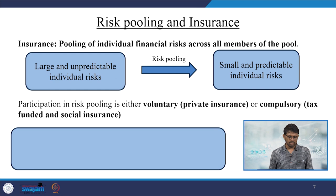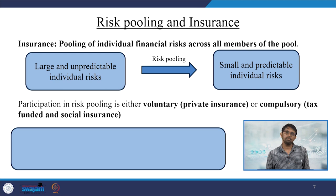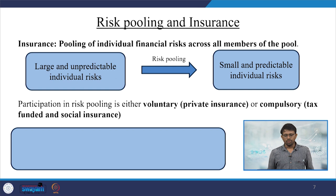Insurance is a pooling of individual financial risk across all members of the pool. Large and unpredictable individual risks become small and predictable through risk pooling. Risk pooling is indeed required to reduce the problems of risk. Participation in risk pooling is either voluntary, through private insurance, or compulsory, through tax-funded or social insurance.